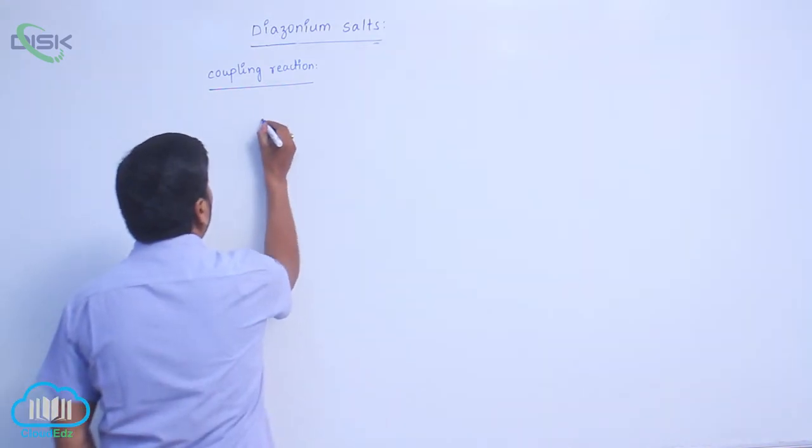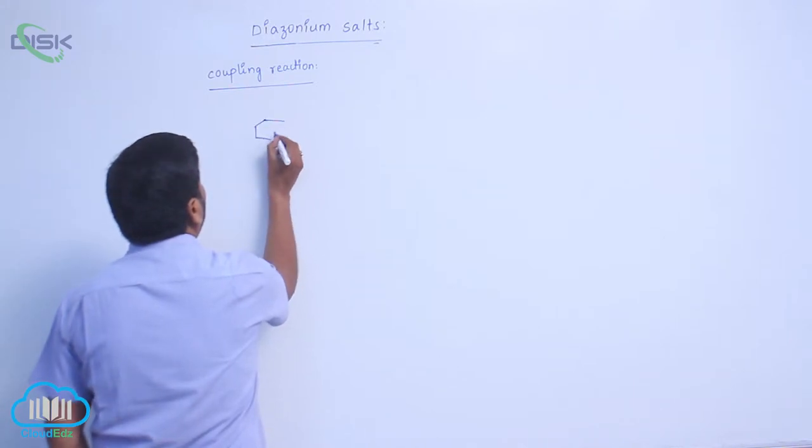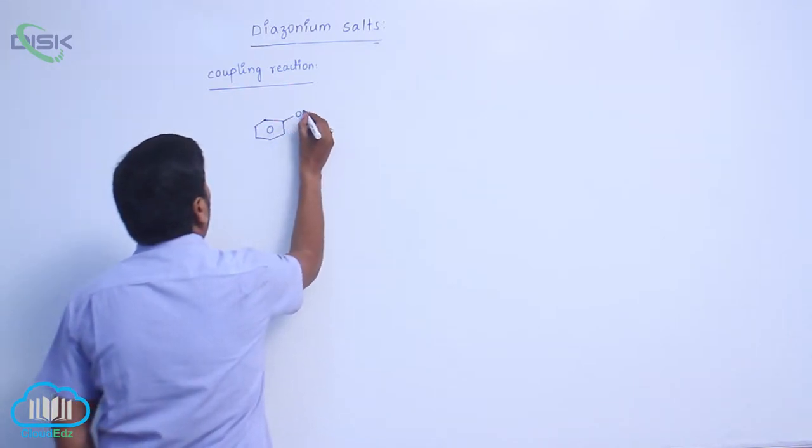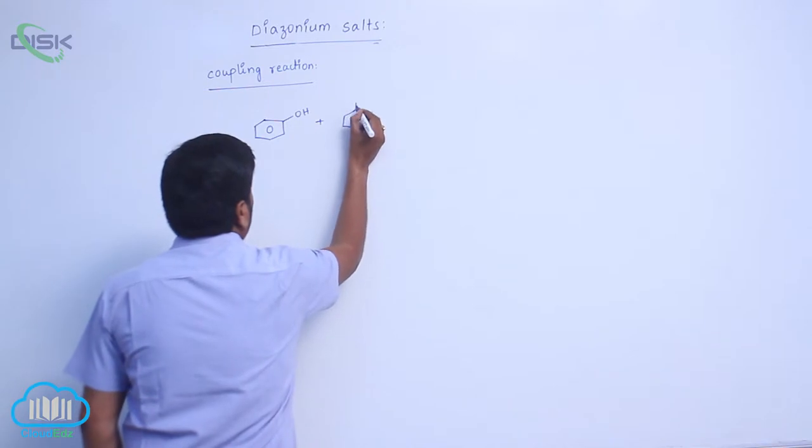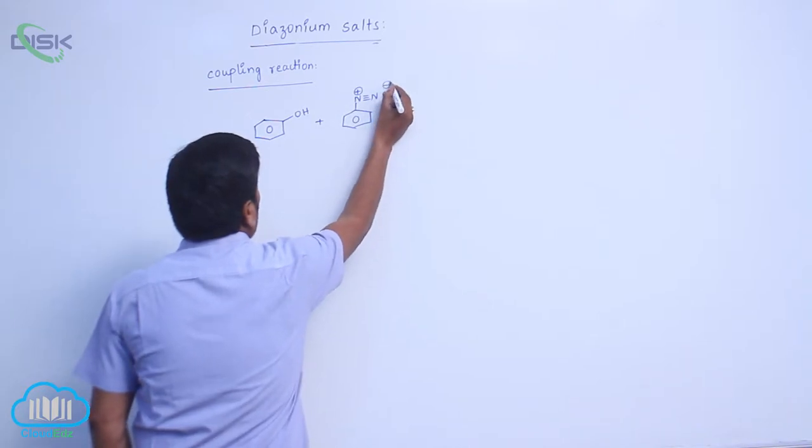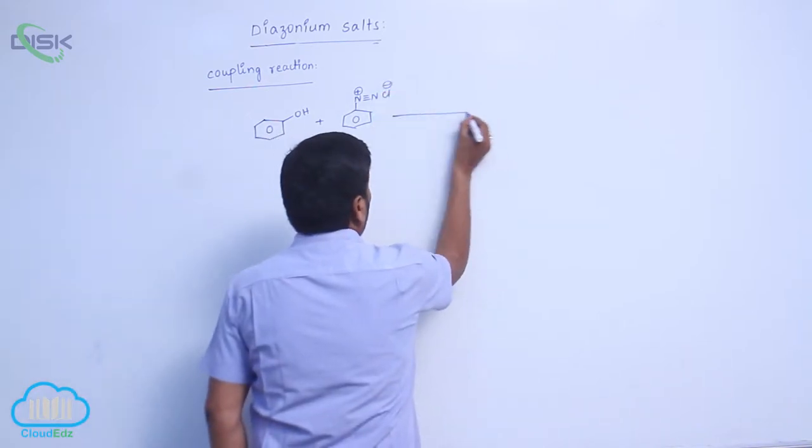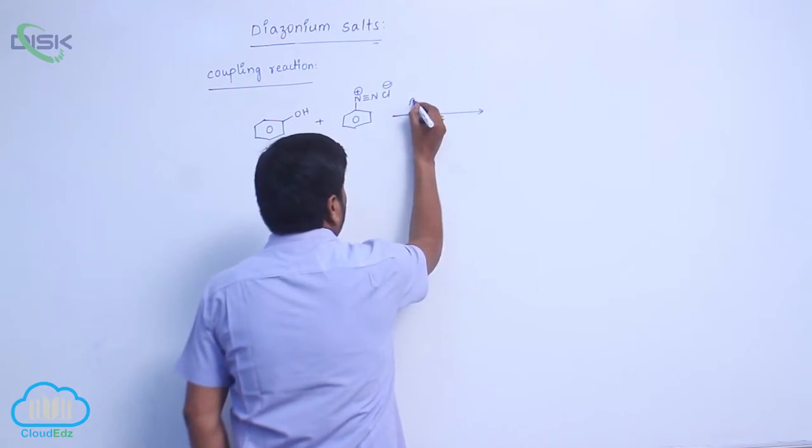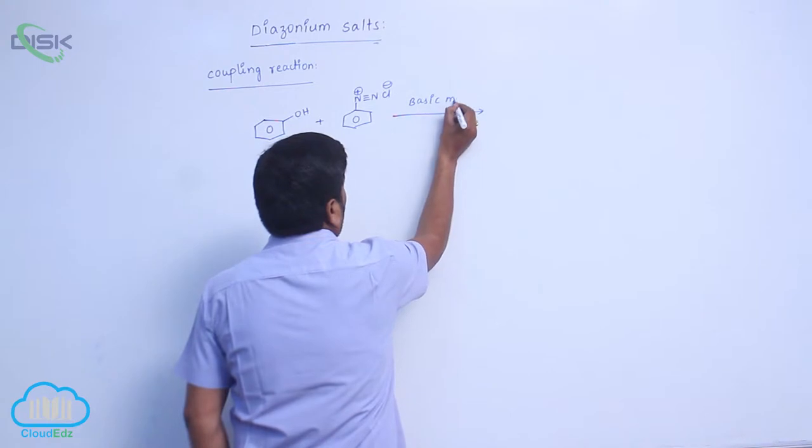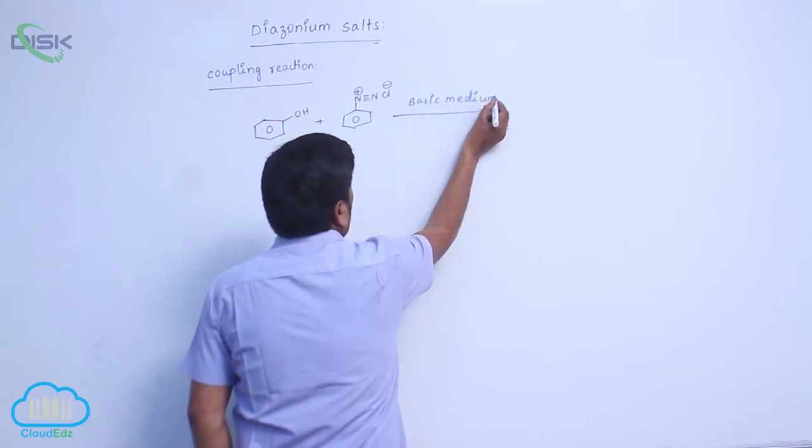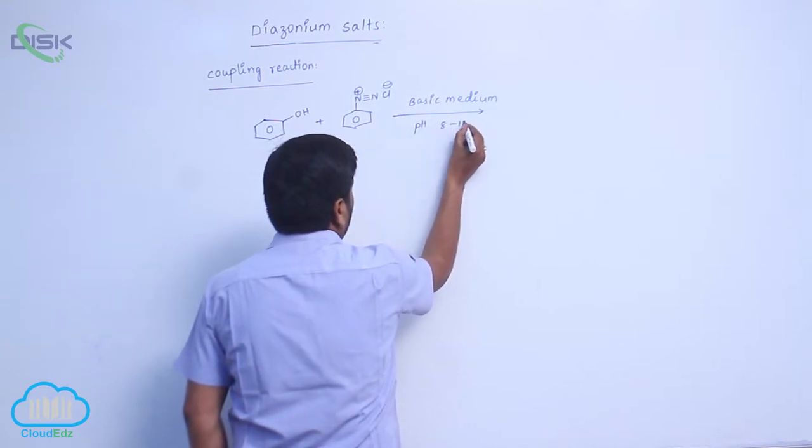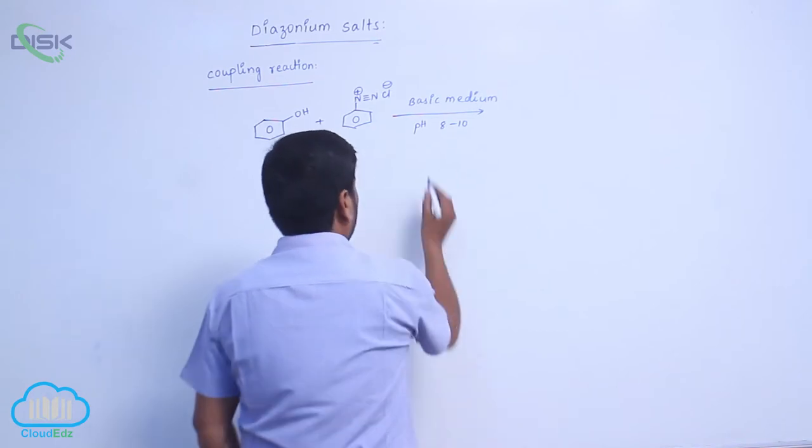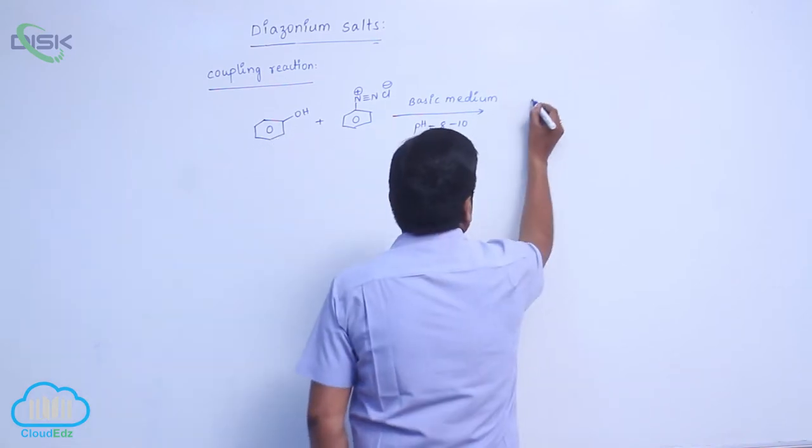Next, phenol reacts with benzene diazonium chloride (N≡N+ Cl-). This reaction takes place in basic medium, pH range approximately 8 to 10.